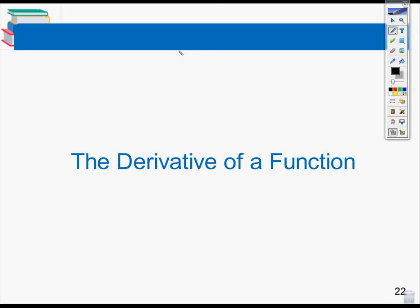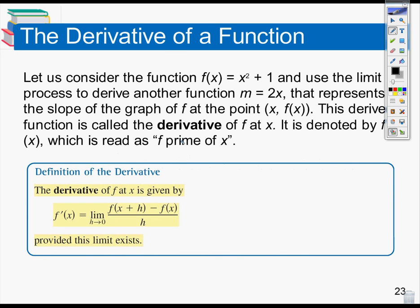Hopefully you've done those two exercises and you're feeling pretty good about it. Now we can move on to: I don't want just the slope at a particular point — I want an equation that shows me the slope at every point, which is what we call the derivative of a function. A little bit of notation: the derivative is generally written as f prime of x, and that's how it's spoken — f prime of x. We're going to use this same difference quotient and the limit as h approaches zero, but instead of substituting a singular value, I'm going to substitute in an entire function to find the derivative.